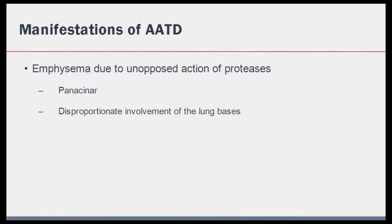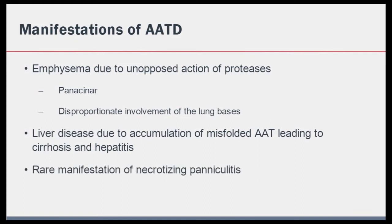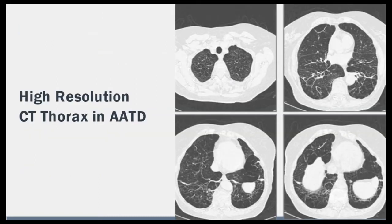Liver disease occurs in approximately 10% of ZZ alpha-1 patients, and this happens as a result of misfolded alpha-1 antitrypsin accumulating in the liver and causing hepatitis and cirrhosis. A rare manifestation is necrotizing panniculitis, which is a painful inflammation of the subcutaneous tissue that can present rapidly and cause significant morbidity. In patients with alpha-1 antitrypsin deficiency, the predominant CT findings are of emphysema seen throughout the lungs. However, the hallmark feature in alpha-1 is lower lobe predominant emphysema, as indicated by the arrows shown.